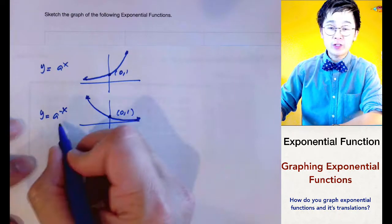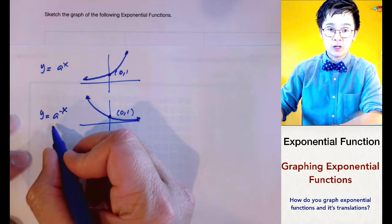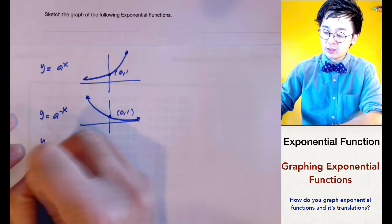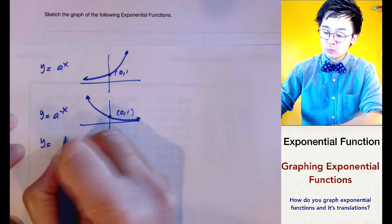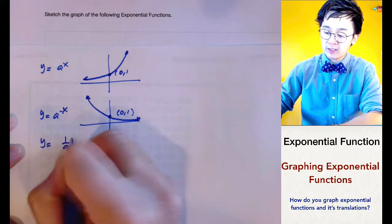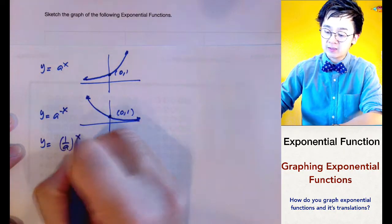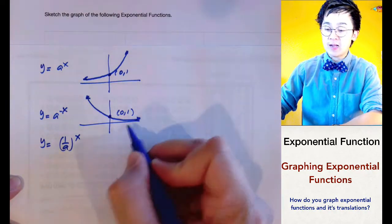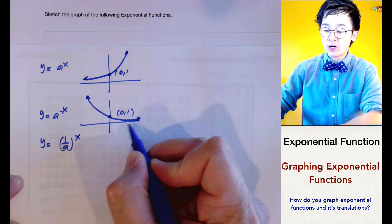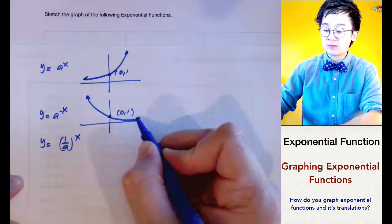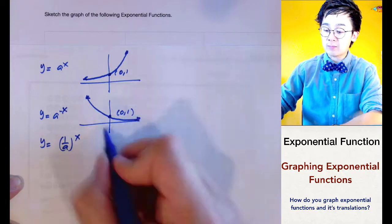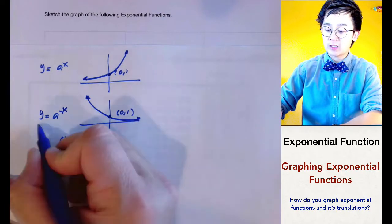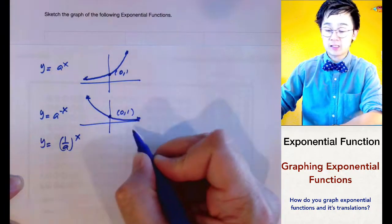Another form of this behavior is when your function is 1 over a to the x. This is another way of representing a decreasing graph, and it is the same as the graph of y equals a to the negative x.